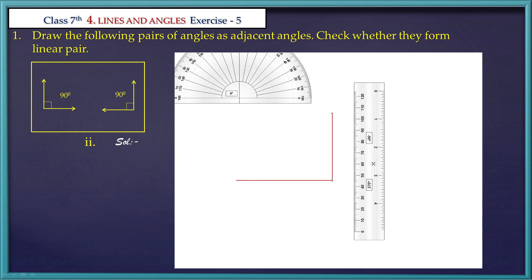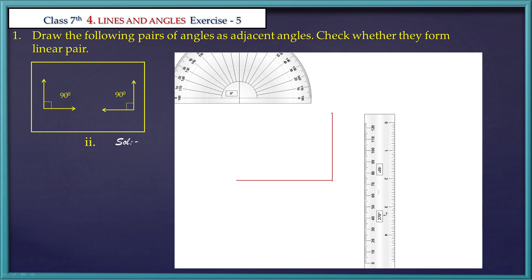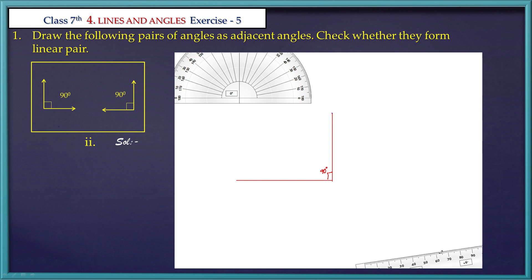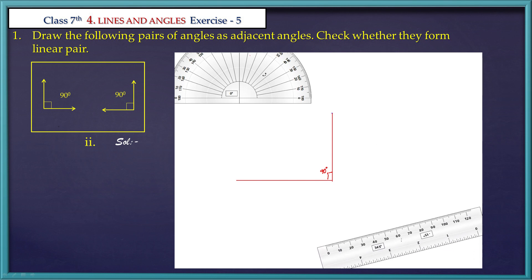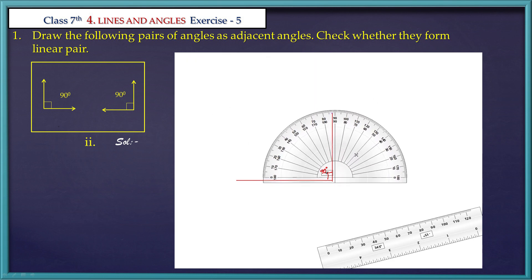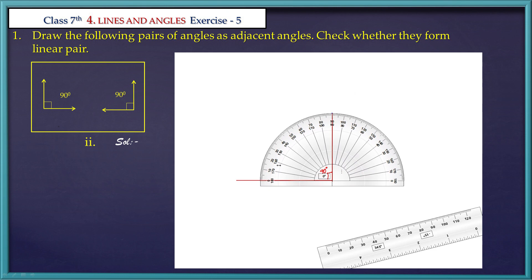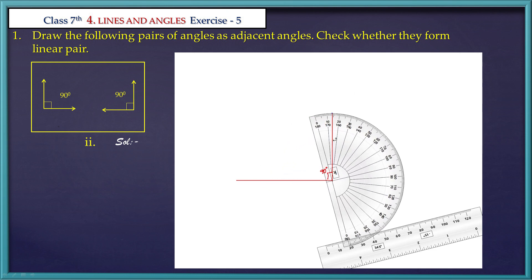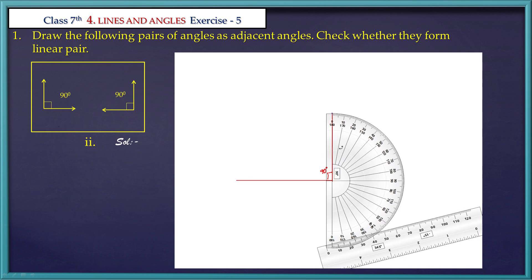Now we have a form of 90 degrees angle. This is a 90 degrees angle. Now we have to draw a second 90 degrees angle. Now we place the protractor. This 90 degrees angle will coincide with the second arm — for the second arm, the protractor will be at 0 degrees angle. The second arm will coincide. Now we have to measure 90 degrees.